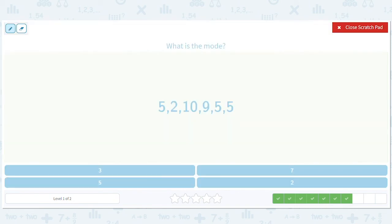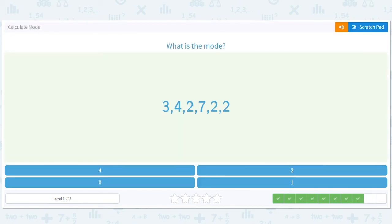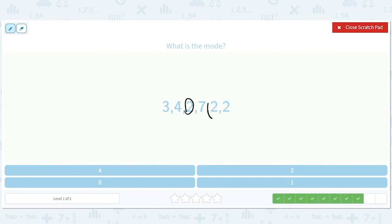How about here? We've got five, five, five. So five is the mode. How about this? What's the number that pops out at you? Two, two, two. So two is the mode.